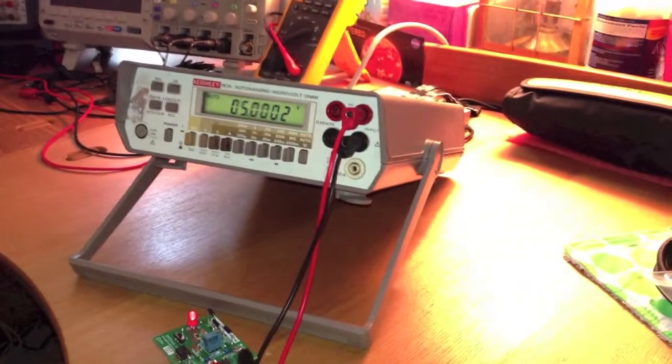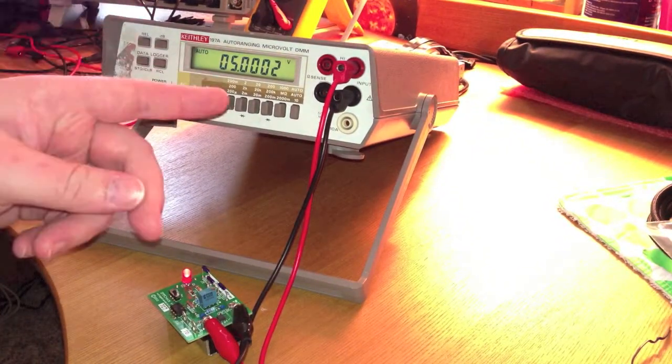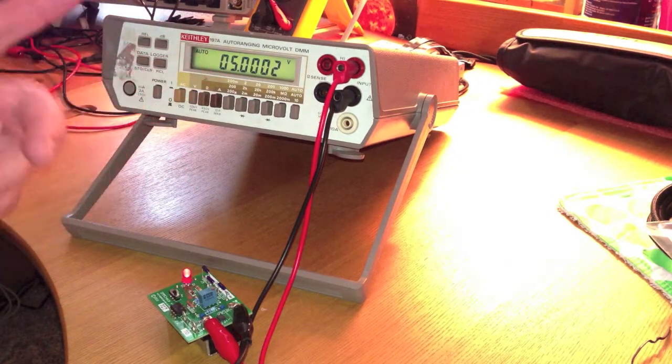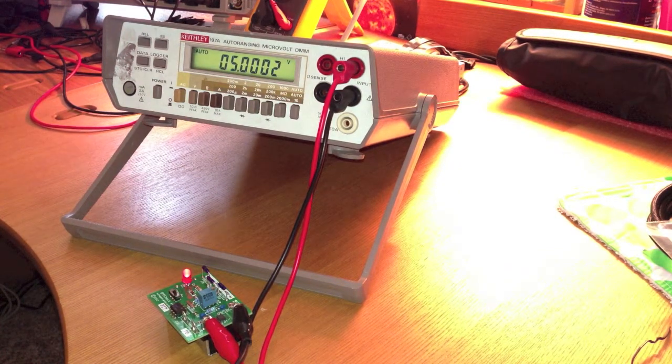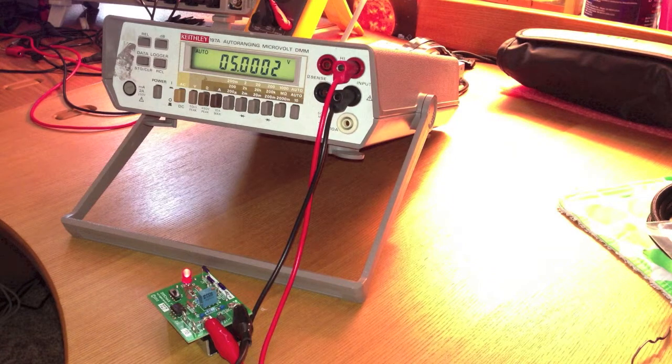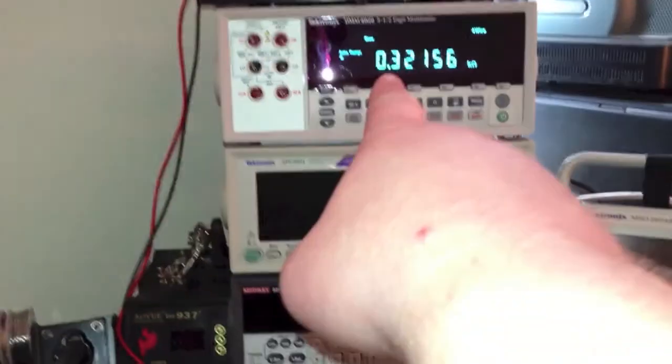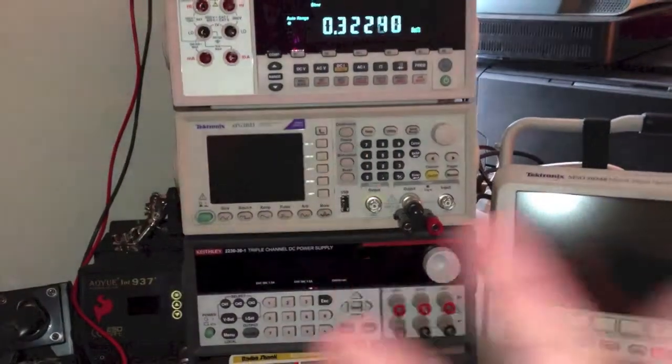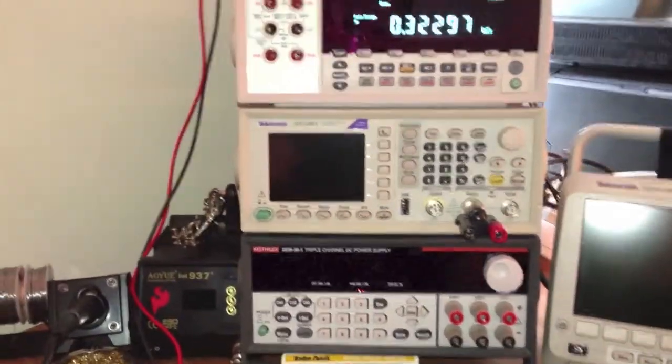Incidentally, this Keithley 197A that I paid $85 for, out of the box, this has better calibration than my Tektronix DMM 4020, which is a sub-thousand dollar unit. And that's something else too. The Tektronix DMM 4020, all of my other gear here came with calibration certificates.